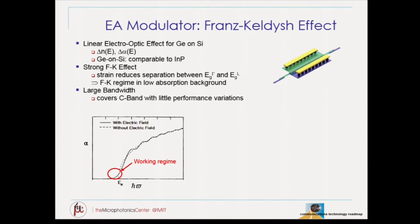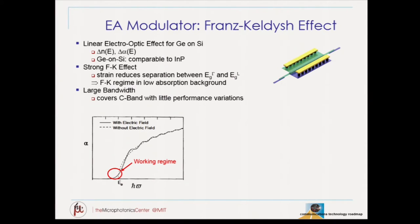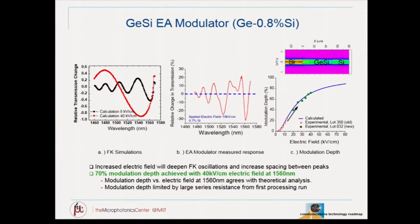The same germanium device used for the photo detector is also used for the modulator. We use a shortened germanium structure, but instead of extracting carriers we apply a field — through a modulator driver — to create absorption or passing of signals. The Franz-Keldysh effect works by operating at the lower absorption region to make it more efficient; voltages on the order of 1.5 volts create enough field effect to cause the shift in absorption needed to function as a modulator. We see that larger fields deepen the Franz-Keldysh oscillations, which is desirable for the modulation effect, and overall we see excellent performance on the modulator.